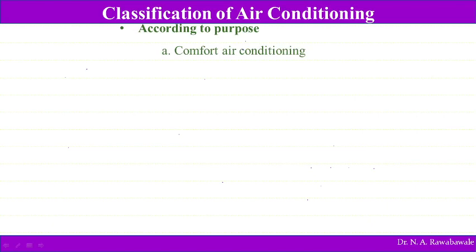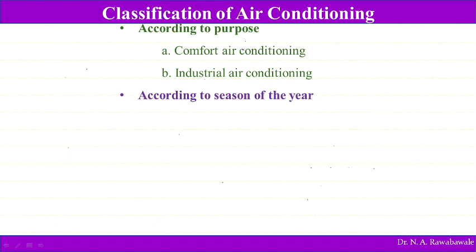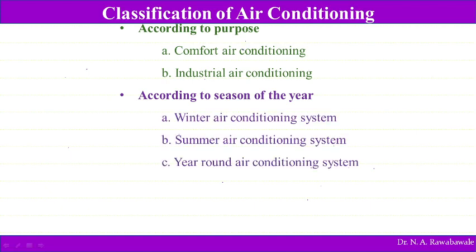Coming to the classification of air conditioning — the first classification is according to purpose. If used for human comfort, it is called comfort air conditioning; if used for industrial purpose, it is called industrial air conditioning. The second classification is according to season of the year: winter air conditioning system, summer air conditioning system, and year-round air conditioning system.